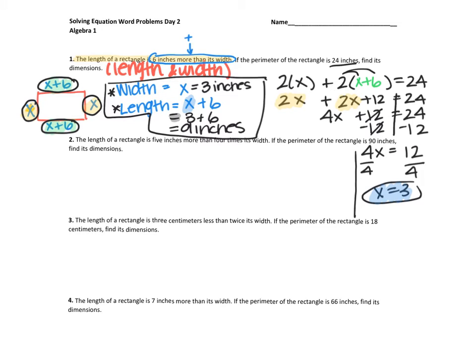Alright, let's try another one. Example two says the length of a rectangle is five inches more than four times its width. If it helps to visualize, you can always start with a rectangle. I'm going to let the width be plain old X since I don't really know how long it is. My length, it says, is five inches more than four times its width.